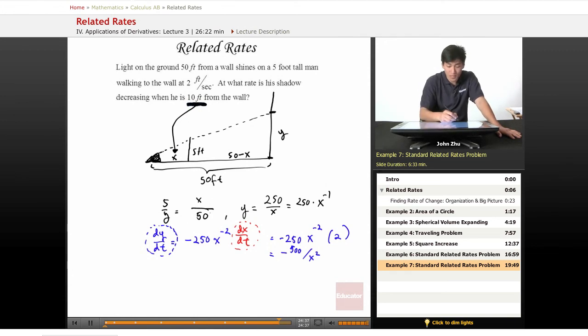So let's solve for dy dt equals negative 500 over 10 squared. Actually, x is not what they're giving you. So here it's a little tricky. 10 feet from the wall, 50 minus x is 10 feet from the wall. So actually, 10 feet is 50 minus x. So we'll have to do a little bit of arithmetic to get x. 50 minus x equals 10, then x equals 40.